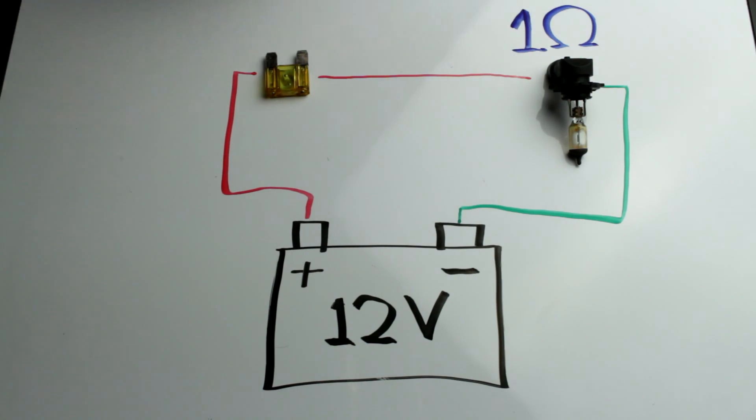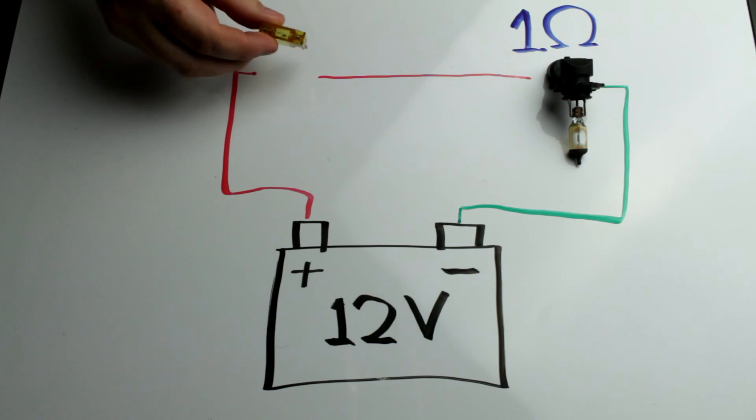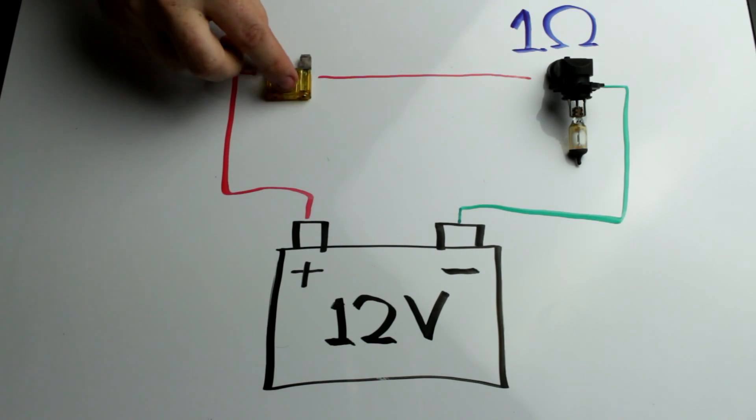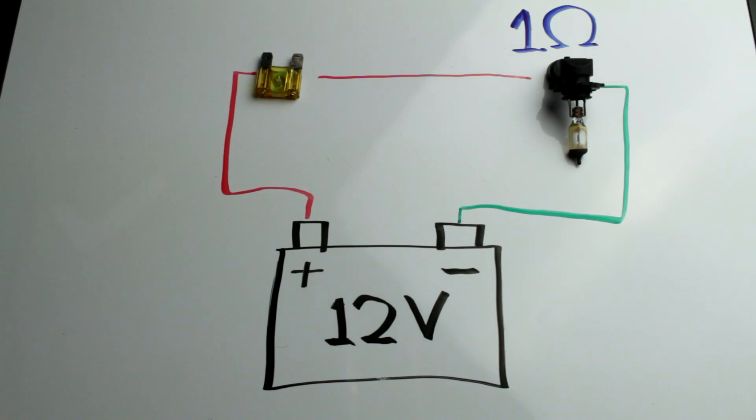So is this 12-amp circuit going to blow this fuse? We'll look at the top of this fuse, and we'll see it says 20A for 20 amps. So this fuse is rated to work up to 20 amps.